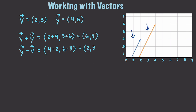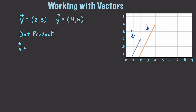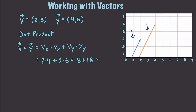Now the dot product is going to take two vectors and return a scalar. Remember, a scalar has magnitude but no direction. And you designate that this is a dot product by putting a dot inside like that. How you figure this out is you would take Vx times Yx plus Vy times Yy. This is going to work out to being two times four plus three times six, and you'd get a final value of eight plus eighteen, which is equal to 26.